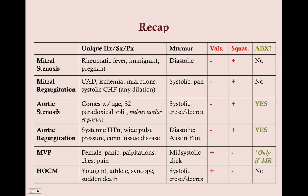Final recap: Mitral stenosis — rheumatic fever, immigrant, pregnant, diastolic murmur, no antibiotics needed. Mitral regurgitation — coronary artery disease, ischemia, infarction, systolic CHF, pansystolic murmur, no antibiotics needed. Aortic stenosis — comes with age, S2 paradoxical split, pulsus tardus et parvus, crescendo-decrescendo systolic murmur, antibiotic prophylaxis required for any aortic defect. Aortic regurgitation — systemic hypertension, wide pulse pressure, eponymous signs, connective tissue disease association, diastolic murmur at right costal margin, Austin Flint murmur at apex, antibiotics needed.